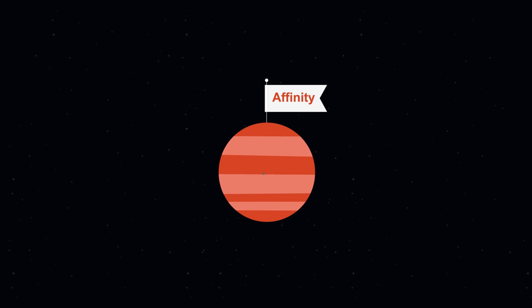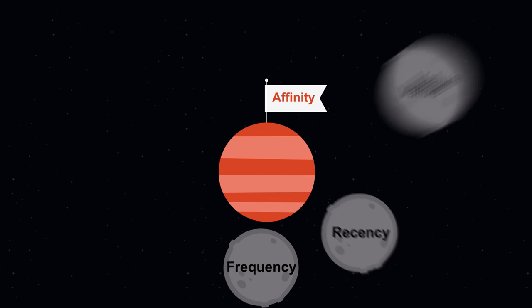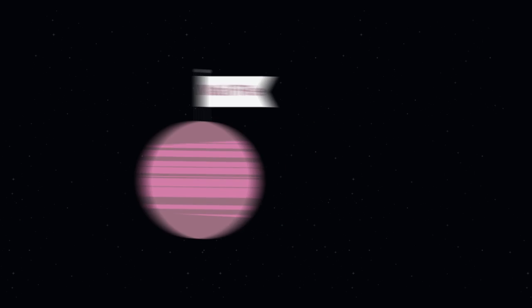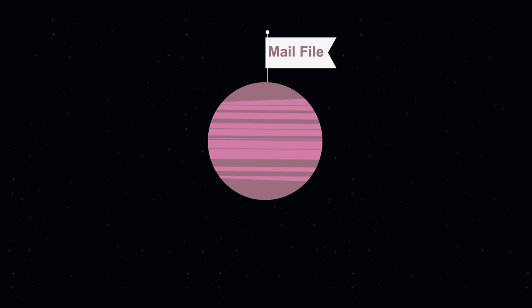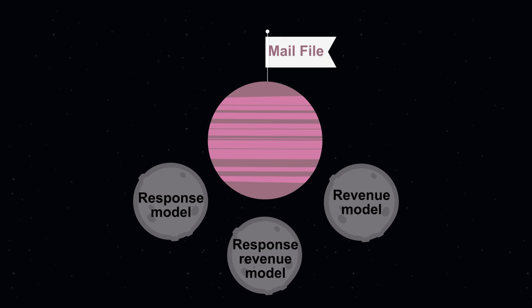The most adaptable model is called Affinity. This can be combined with any number of criteria to create a bespoke model for you. Mail file models use learnings from your previous campaign files and can focus on response, revenue, or a combination of the two.